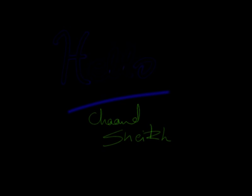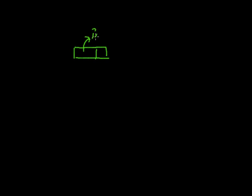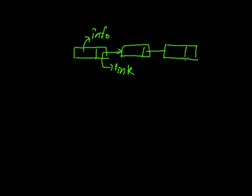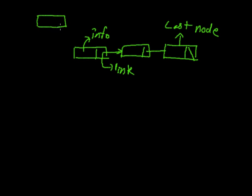Hello, this is Chan Sheik and today we are going to code a program for singly linked list. A singly linked list is a list of nodes, and in a node there are two parts. The first part is an info part where we store the data. The second part is the link part, which is an address to some other node. If the address part is null, this node is not pointing to any other node, meaning it is the last node. The node which points to the first node is called the start node.